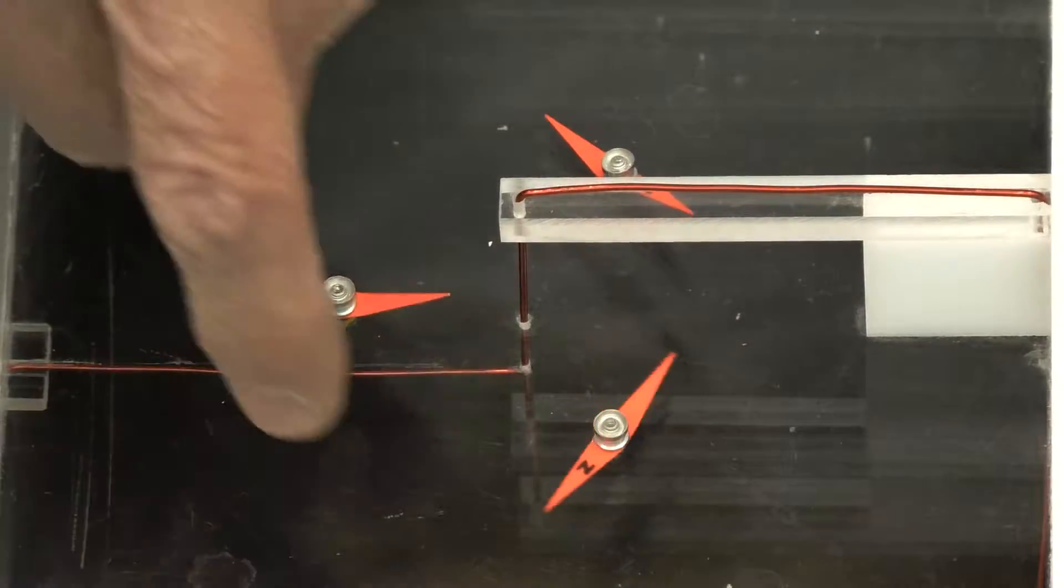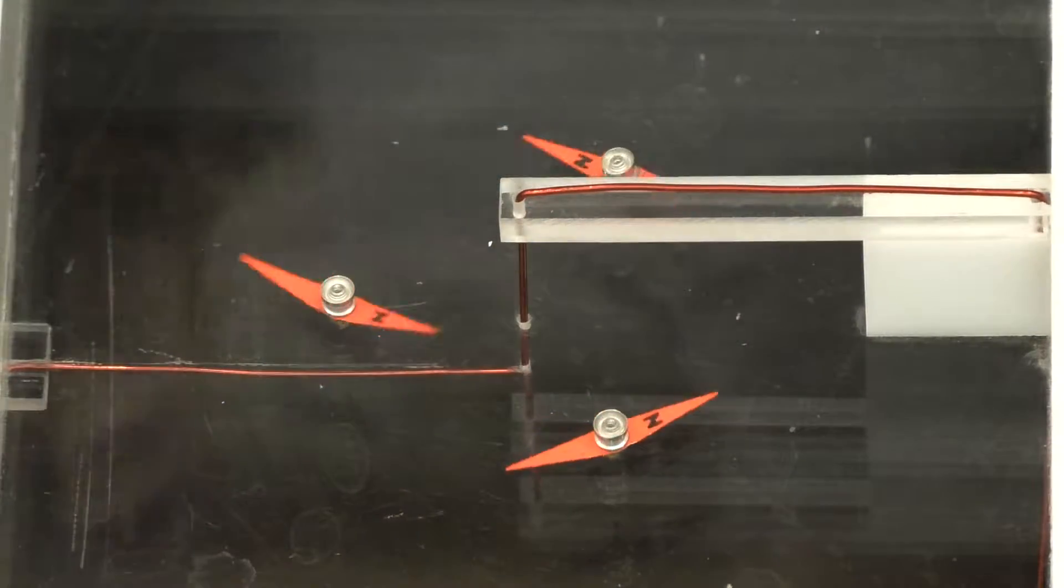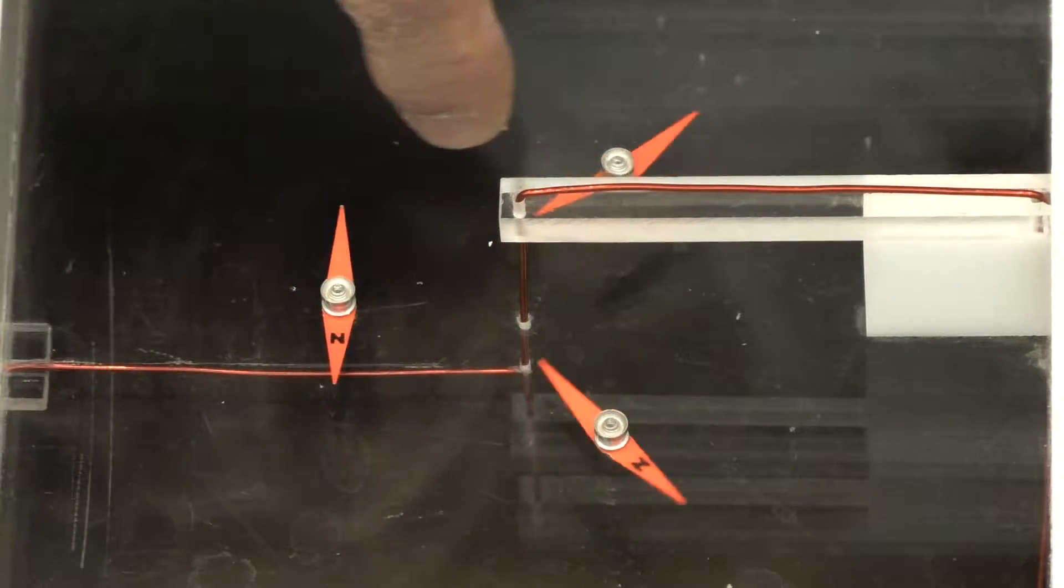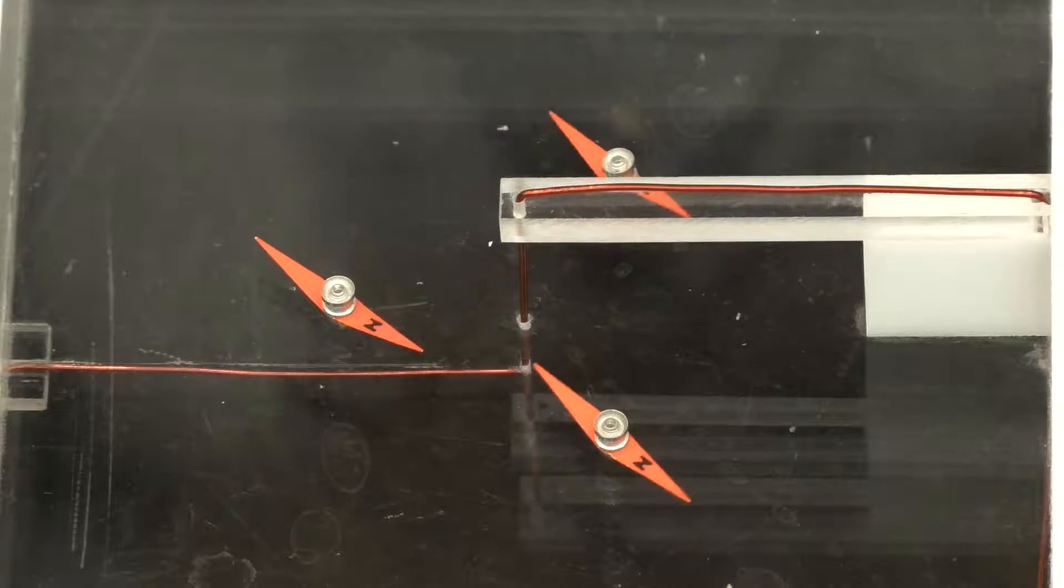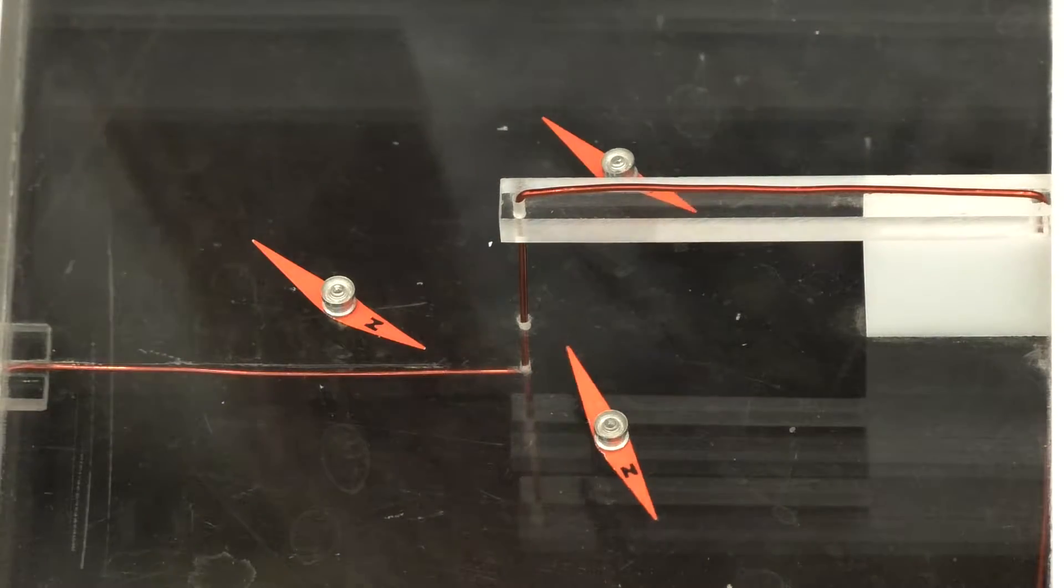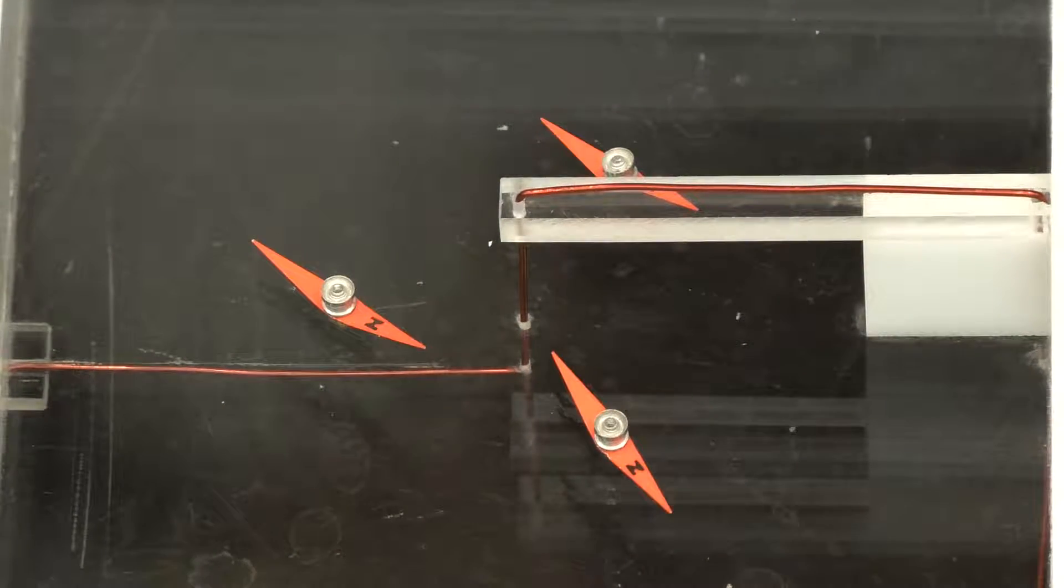We have three little magnets, compass needles. They're actually interacting a little bit with each other right now, as well as interacting with the Earth's magnetic field. They're all pointing roughly in the direction of north in this particular room.